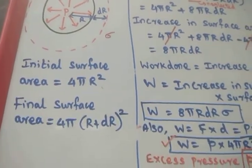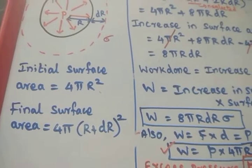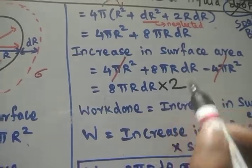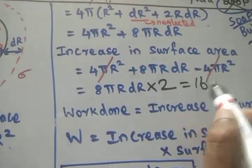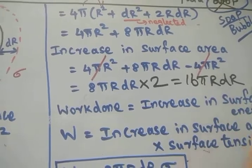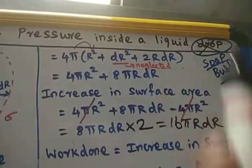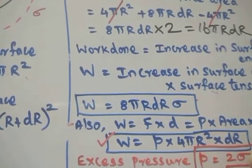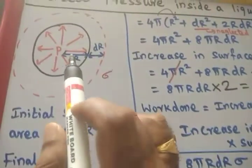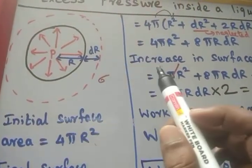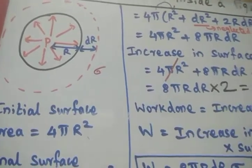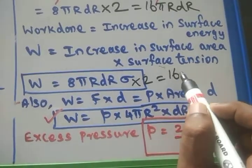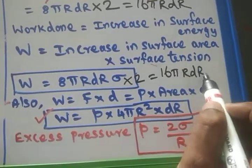So we put a factor of 2 in all the cases. The increase in surface area will become 8 pi R dr multiplied by 2, giving 16 pi R dr. That is the additional factor for the soap bubble. The work done in enlarging the soap bubble then gives 16 pi R dr times sigma.